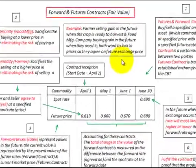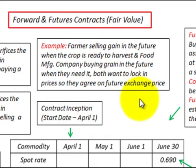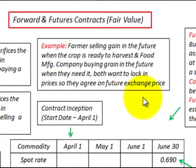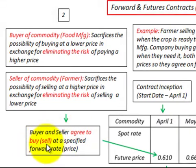A good example of these contracts would be where a farmer is selling grain in the future when the crop is ready to harvest, and a food manufacturing company like a cereal company would be buying grain in the future when they need it. Both want to lock in prices so they agree on a futures exchange price. At the contract inception, or start date, the buyer and seller agree to buy and sell at a specified forward rate or forward price.